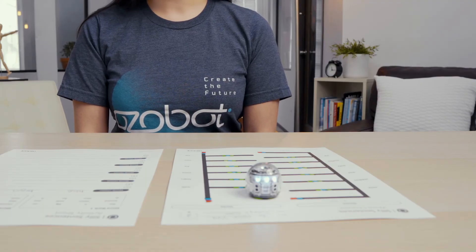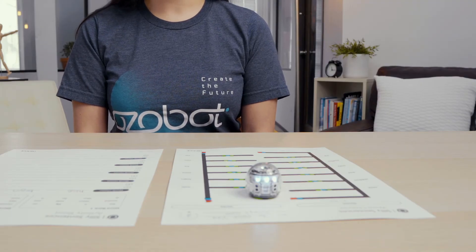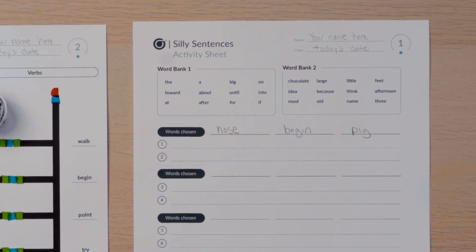On your activity sheet, you'll notice there are two word banks. You will be using words that your Ozobot chose and words from word bank one for your first sentence. You can choose the words from word bank one as many times as necessary to complete a sentence.